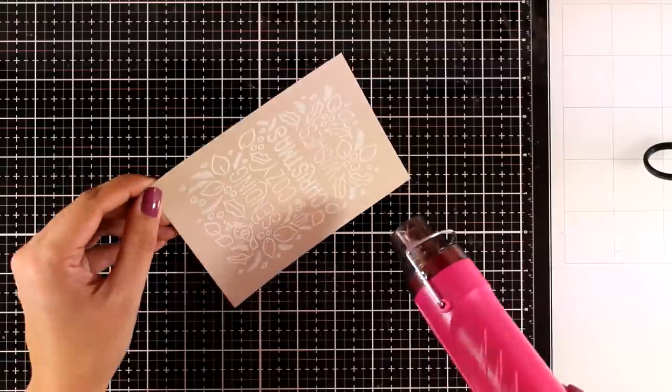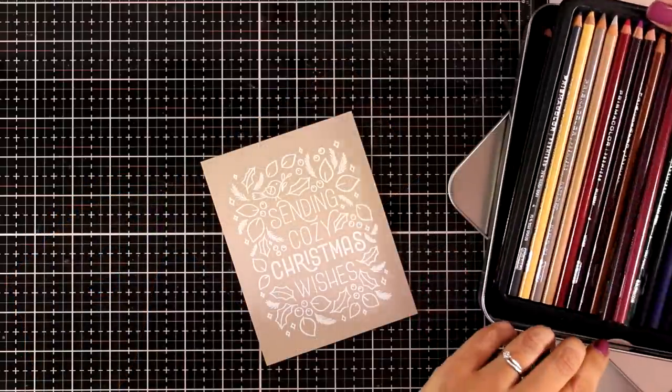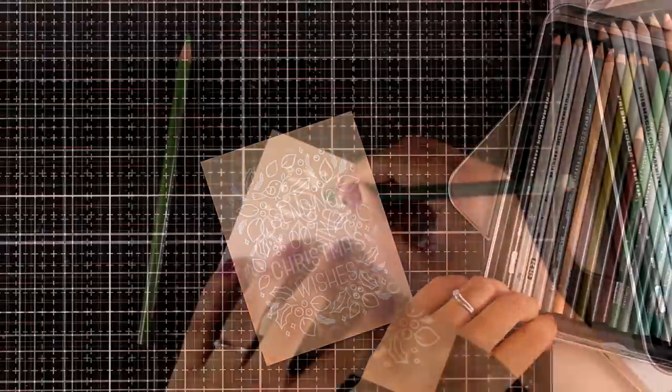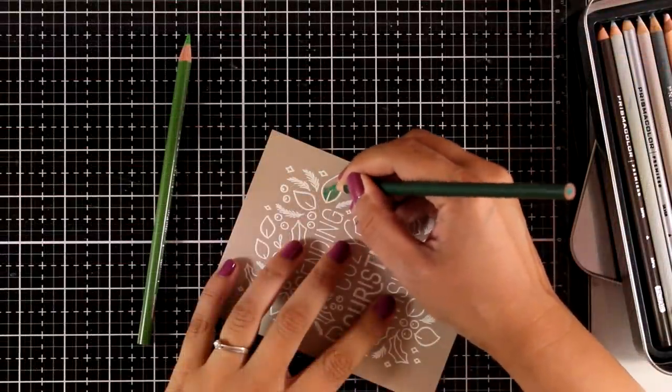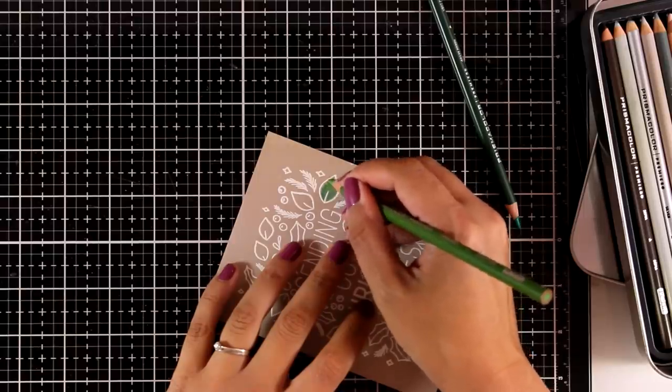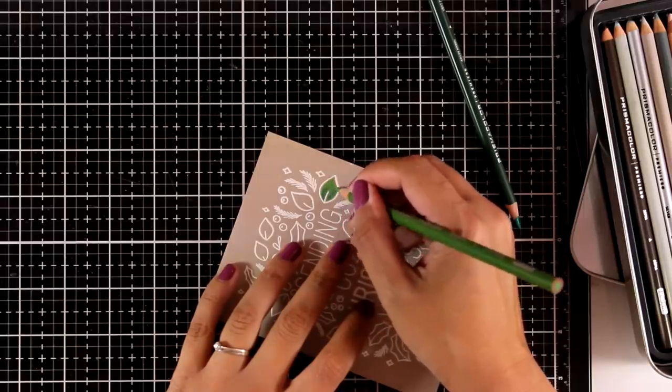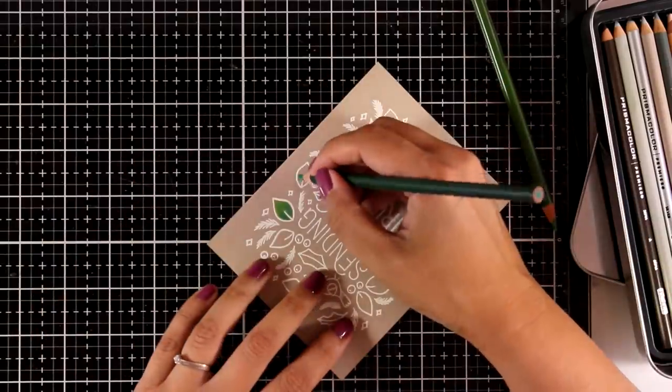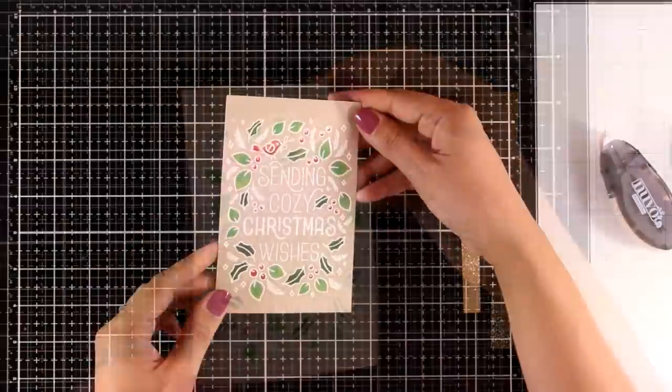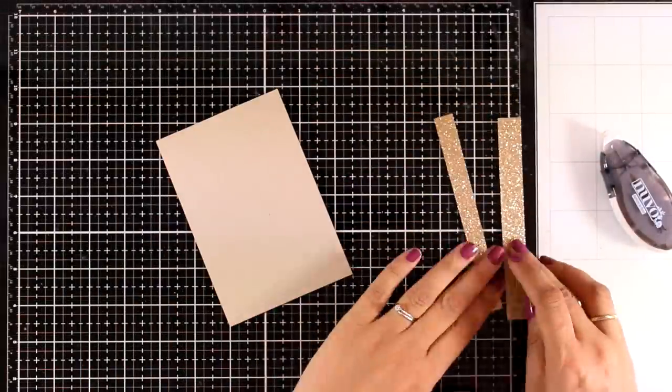Now for this card today I decided to do some coloring and I'm going to use my Prismacolor pencils. I love how these write on Neenah craft cardstock and I'm going to add a few shades of green on the leaves as well as some red on the berries and the little birdie. All the images are very small so it doesn't take a lot of time to color it in and then I'm going to put my card together.